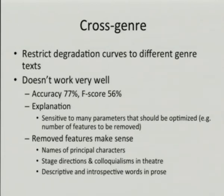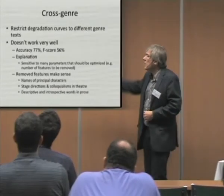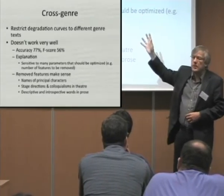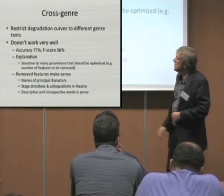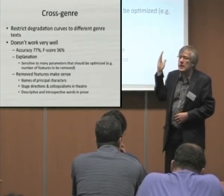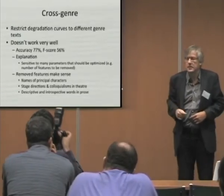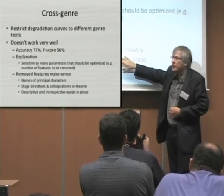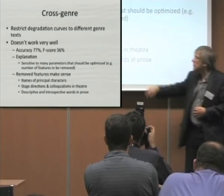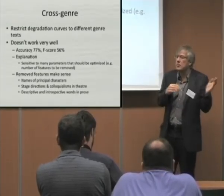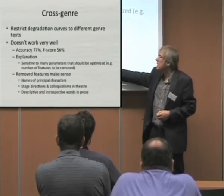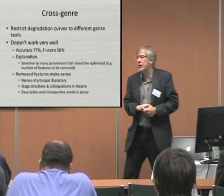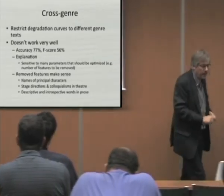We have not yet given up. Mike Kestemont, who is mainly doing work on this, is trying other parameter settings, optimization methods, features, and machine learning methods. But it doesn't seem to work for the cross-genre setup — and nothing works for the cross-genre setup until now. What is encouraging is that our hypothesis was true but probably not true enough to get better results. Indeed you get names of principal characters as the most predictive features thrown out very quickly, along with stage directions and colloquialisms in theatre texts, and descriptive and introspective words in prose. So it seems to work, sort of, but not well enough for the cross-genre problem.